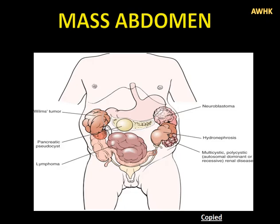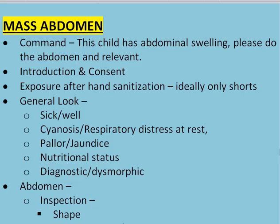Today's short case is mass abdomen, a very important topic. The conditions you can see include neuroblastoma rising from the kidney, hydronephrosis or swelling of the kidney, multicystic or polycystic kidney, lymphoma, pancreatic pseudocyst, Wilms tumour arising from the kidney. You may get a common question about bilateral swelling. Please stick to the abdomen; if you have time then go to the relevant systems.